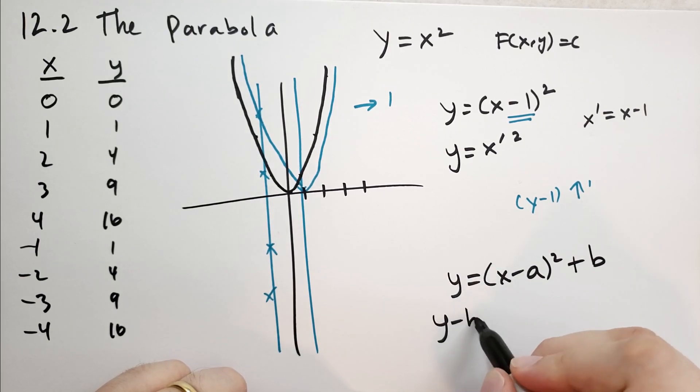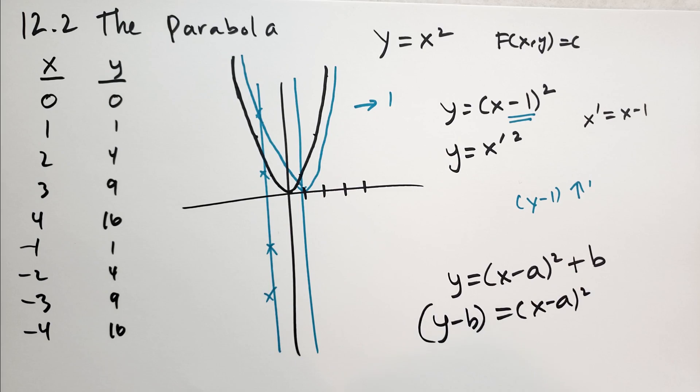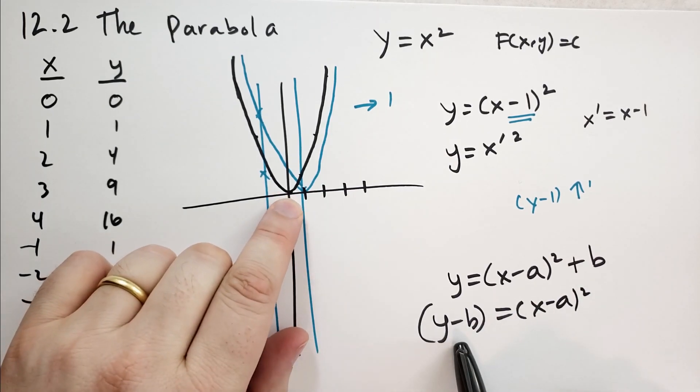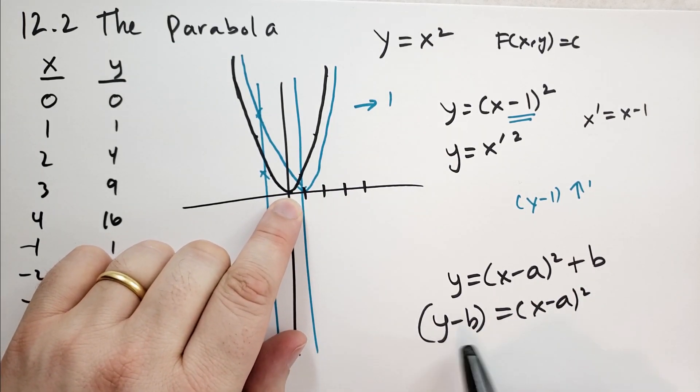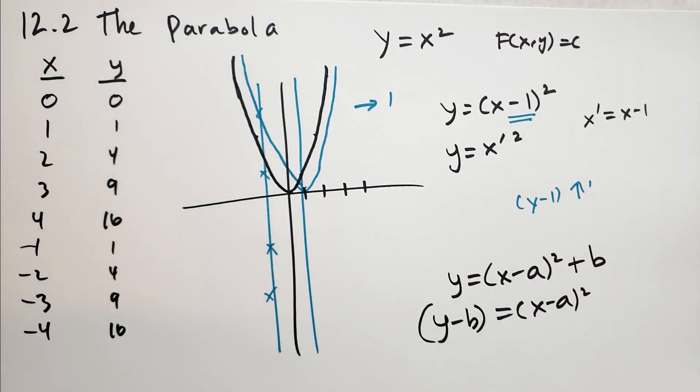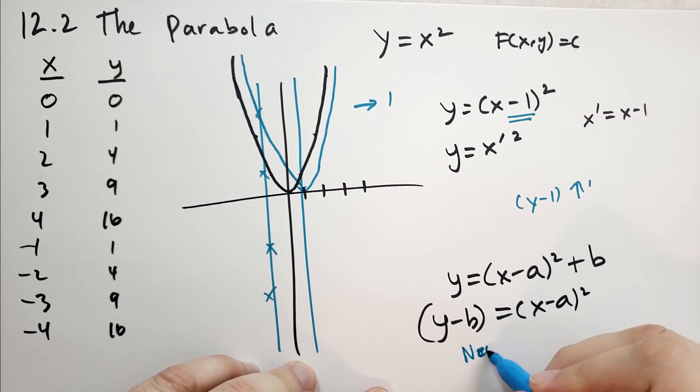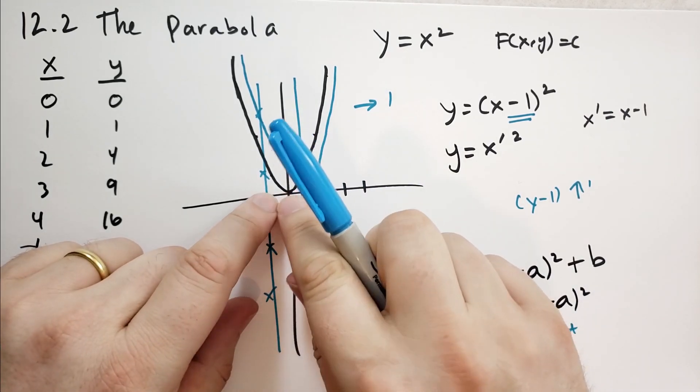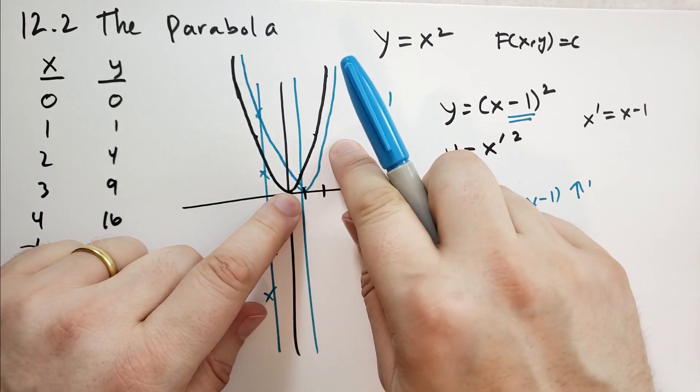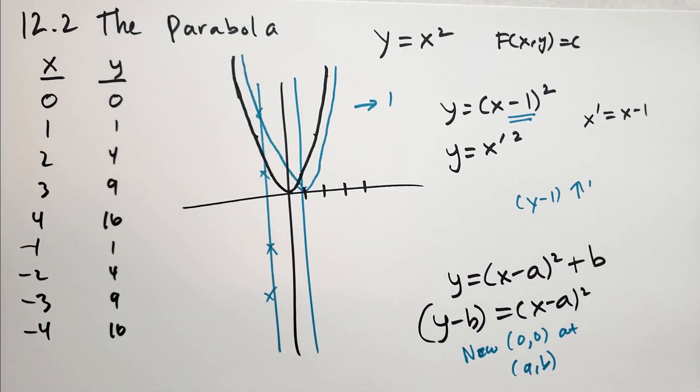Indeed, does that work for parabolas? The answer is yes. So if we have y minus b equals (x minus a) squared, we just move that b to the other side. The new parabola is going to have its point that touches at the origin at the coordinates (a, b). That's all we need to do. The new origin is at (a, b).